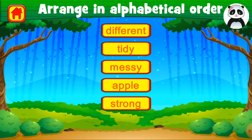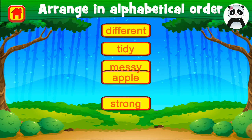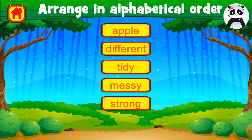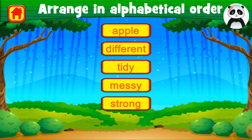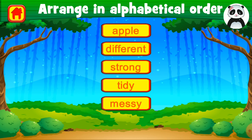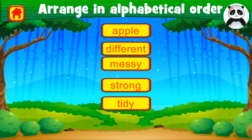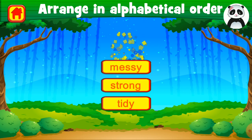Arrange the words in alphabetical order. Number 1 is apple, number 2nd is different, and number 3rd is strong. And here it is. Excellent. Thank you.